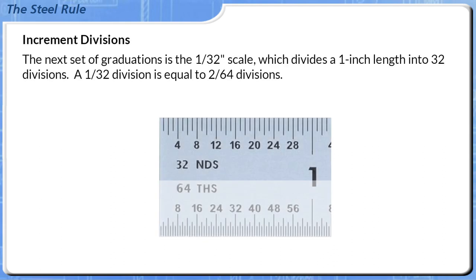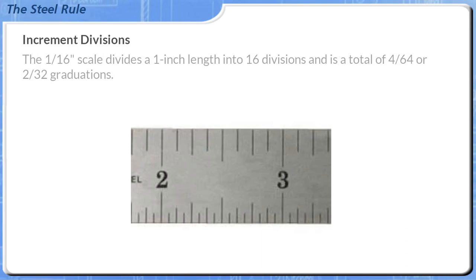The next set of graduations is the 1/32nd inch scale, which divides a 1 inch length into 32 divisions. A 1/32nd division is equal to 2/64ths divisions. The 1/16th inch scale divides a 1 inch length into 16 divisions and is a total of 4/64ths or 2/32nds graduations.